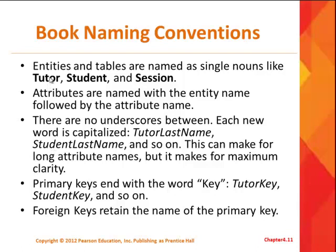Attributes — in other words, the field names within the entities — sometimes follow a standard where they use the entity name followed by the attribute name. For example, if you have a last name in the tutor entity, it's called tutor last name. Or if you have a last name for a student, it's called student last name. Again, as long as you're standardized and consistent, that's fine.